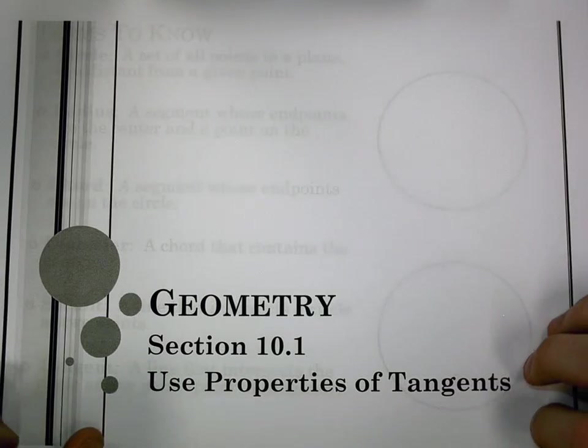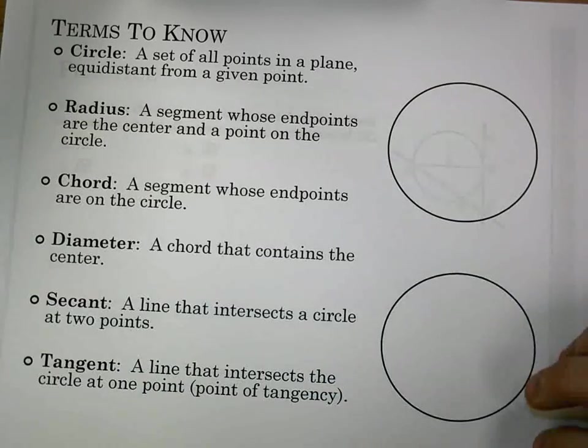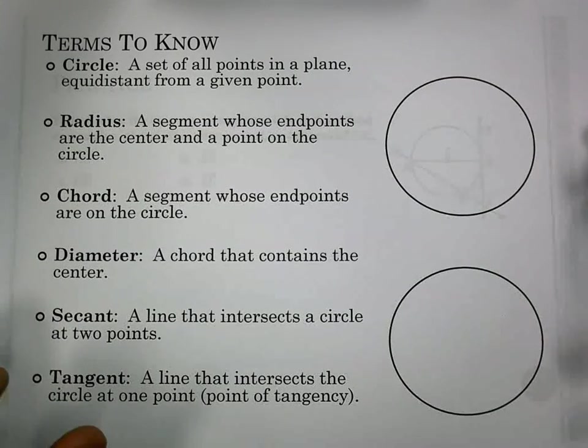For section 10.1, it's titled Using Properties of Tangents, but this is also our first section in the chapter on circles, so we're going to have to first go through a few terms we're going to use throughout the chapter.